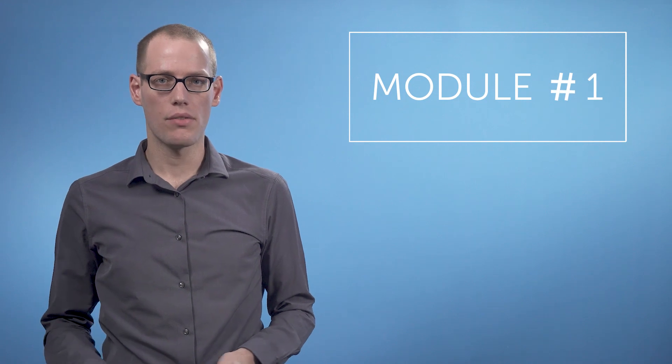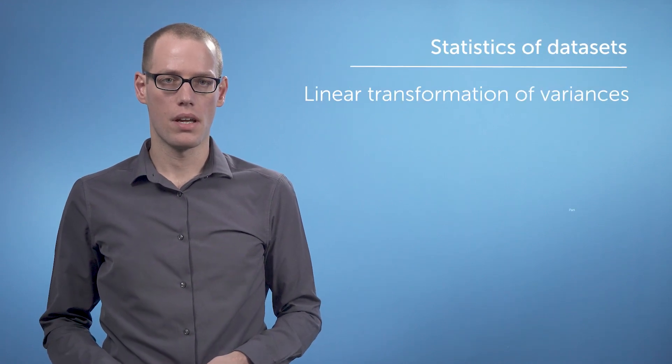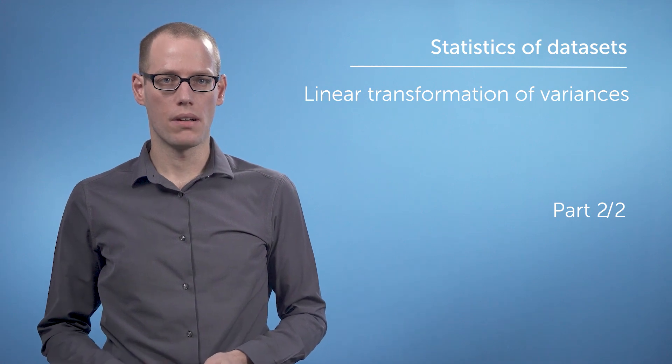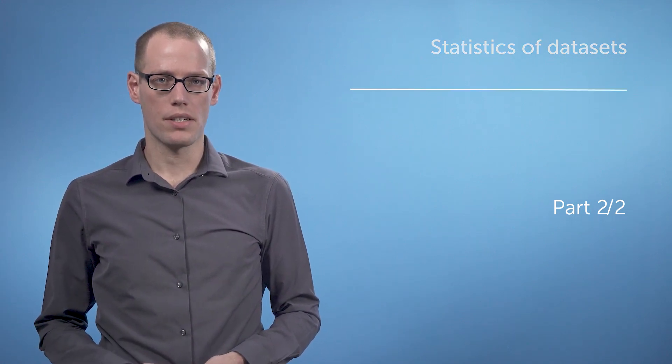We've seen what shifting and scaling a data set does to the mean. Now let's have a look at the effects on the variance. Remember that the variance is a measure of the spread of the data. What do we expect when a data set is shifted?